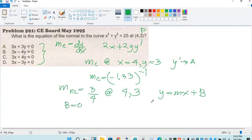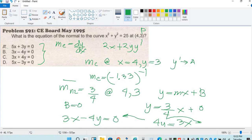Therefore, anong equation ay y is equal to m, 0.75, x plus 0. Therefore, anong equation ay 4y is equal to 3x. Move natin sa kabila, magiging 3x minus 4y equal to 0. Ang answer is letter B.